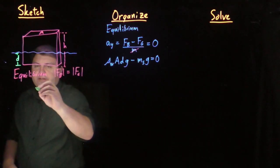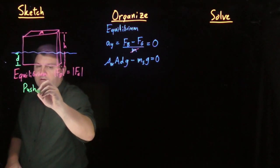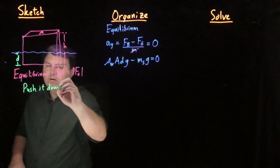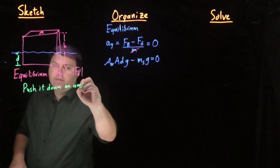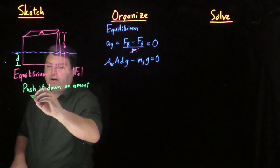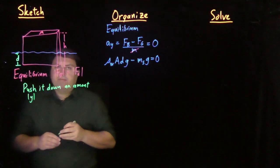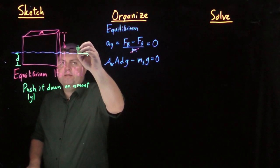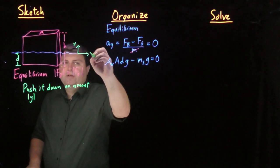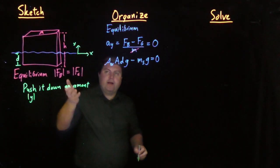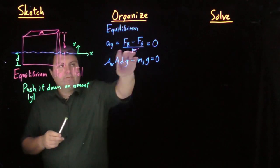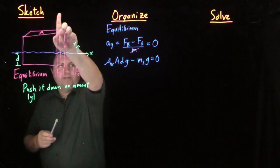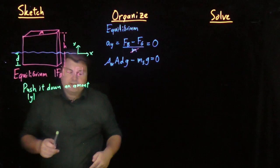So what we want to ask is: we want to now push it down an amount we will call the magnitude of y. So in order to understand this, it might be nice to have our coordinate system just so we understand that we have y is up, x is over. This is what we used here, right? We said our force of buoyancy was pointing up, our force of gravity is pointing down.